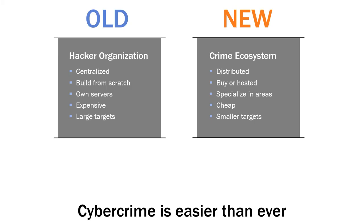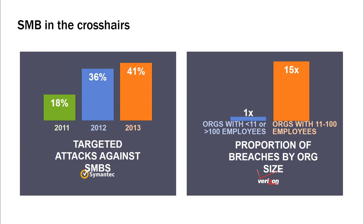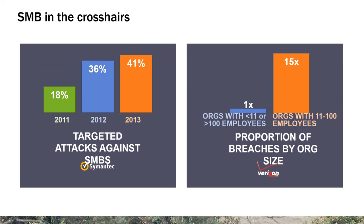In the new world, where we have infrastructure as a service and cybercrime as a service, it's much more distributed. You can buy different components to launch your attack and specialize in certain areas. It's much cheaper and you can be much more opportunistic as a cybercriminal, targeting much smaller and more vulnerable companies. Today we're really seeing an entire ecosystem around this area of cybercrime, with job postings, Bitcoin payment systems, and anonymous marketplaces where you can buy and sell services.